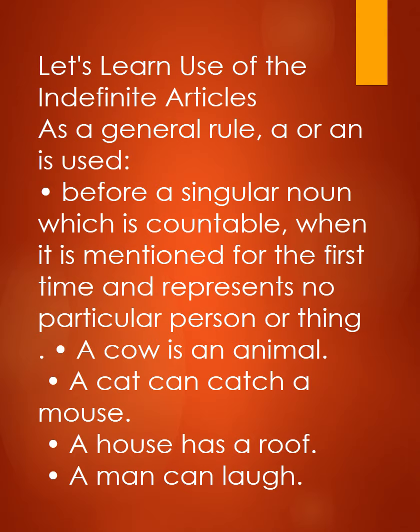Now let's learn the use of Indefinite Articles. The words A and An are called Indefinite Articles because they do not point to any special person or thing — ye kisi bhi specific ya particular person ya thing ko refer nahi karte. As a general rule, A or An is used before a singular countable noun when it is mentioned for the first time and represents no particular person or thing.